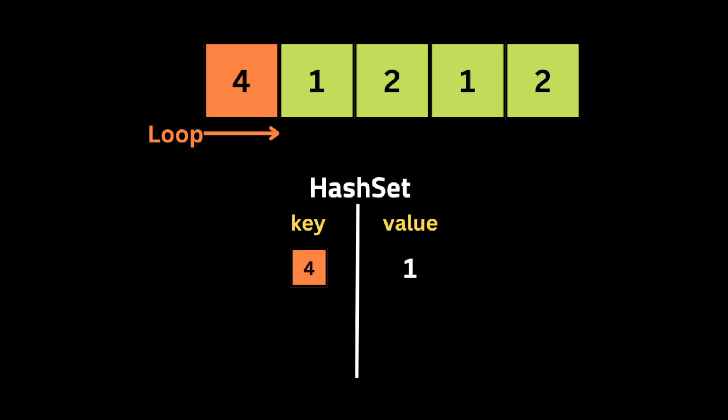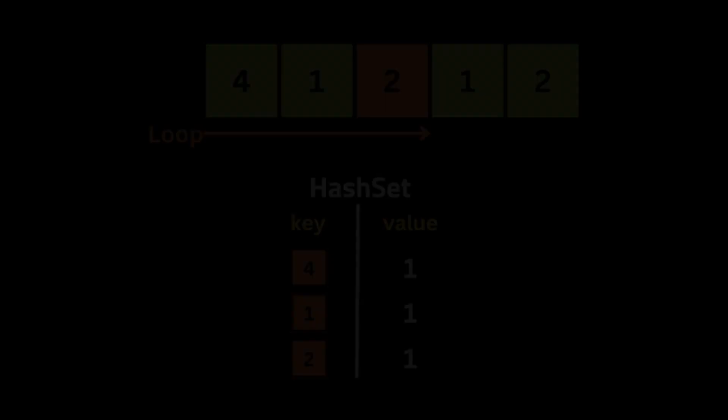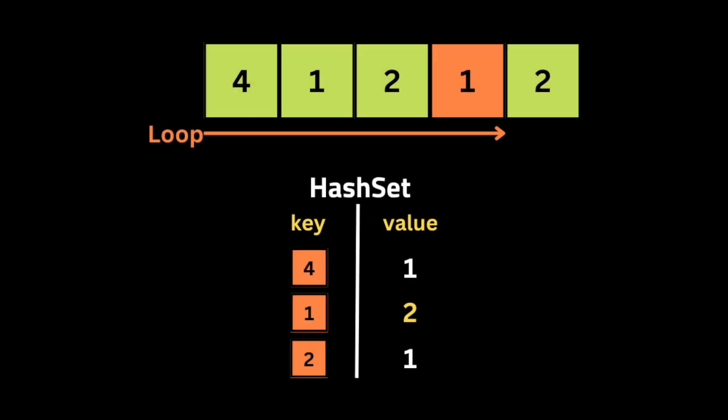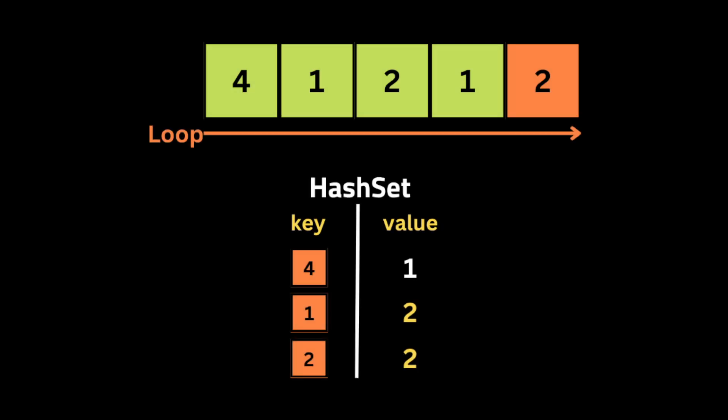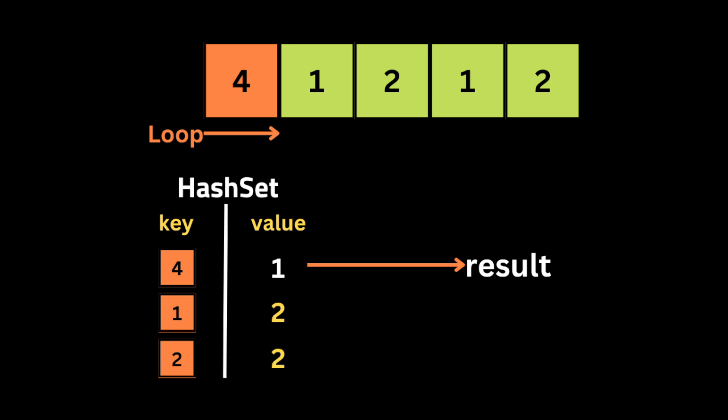We start looping through the array. At each iteration we store the element in the hash set. For example, four gets value one, representing one appearance. Then one gets value one, and two gets value one. When we see one again, we increment its count to two, and similarly for the last repeated number. Finally, we loop through the array a second time and check the hash set: if the value is one, we return that element.